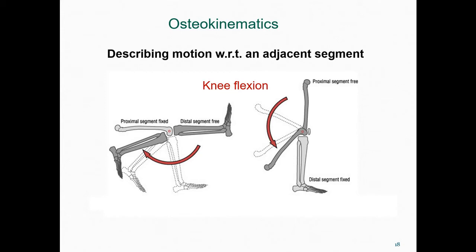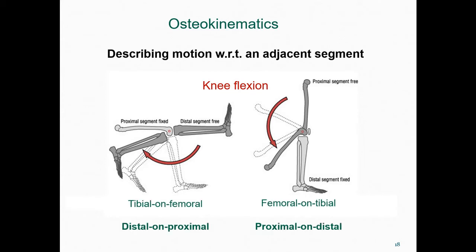On the right, the situation is very different. The distal segment is fixed and the proximal segment is moving relative to it — this might be a person initially standing and then moving into a crouch. Here, our language further defines our reference system, taking a perspective that aids our understanding of the function of the movement. On the left, we would talk about tibial on femoral movement, or distal on proximal movement. On the right, we would talk about femoral on tibial movement, or proximal on distal movement.